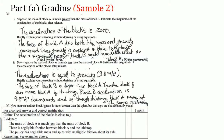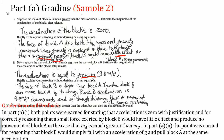Another student wrote: the acceleration of the block is zero — it's not moving. The force of block A has both mass and gravity combined. Since block B has a very very small mass, it would have little effect and a small force. Both points were earned for stating the acceleration is zero and that block B has little effect. That key phrase earns the points. For part B, the point was earned for reasoning that block B would simply fall with the acceleration of g, which is free fall at 9.8 m/s².